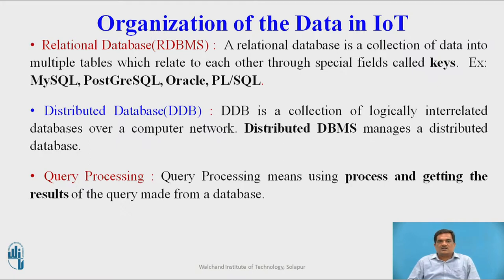A relational database is a collection of data organized into multiple tables which relate to each other. A distributed database is a collection of logically interrelated databases spread over a computer network. The distributed DBMS manages distributed databases. Query processing means using processes to get the result of a query made from the database.